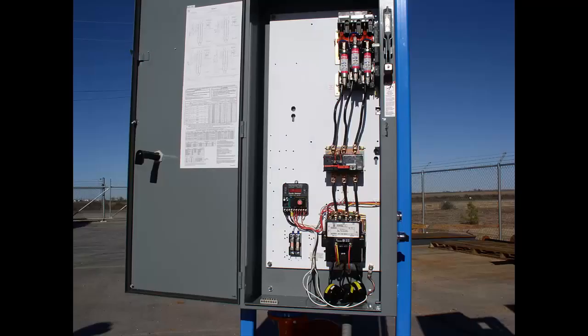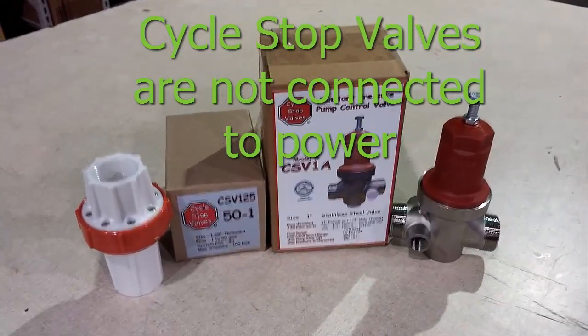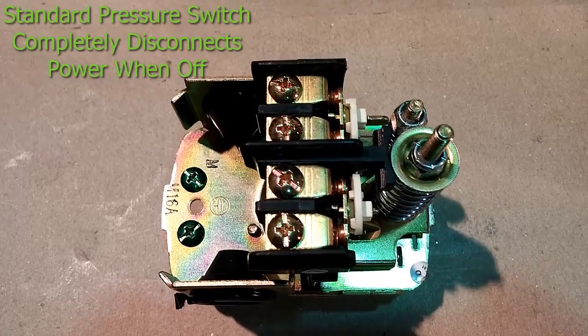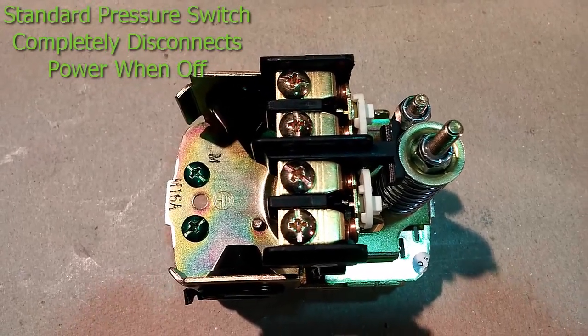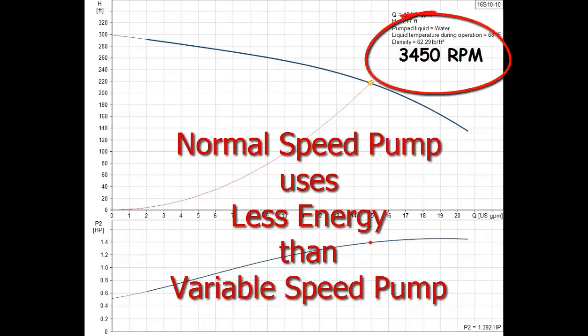Running on across the line, true sinusoidal power, direct from the grid or generator, a normal full speed pump is more efficient. Because the CSV does not use electricity and the standard pressure switch completely disconnects power from the pump, there is zero power used when the pump is off. So now that you know the power consumption for a normal full speed pump can be less than a variable speed pump, let's discuss how a cycle stop valve or CSV can deliver the same constant pressure performance as a VFD.